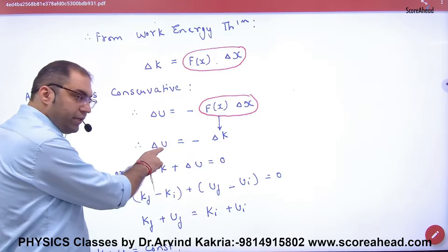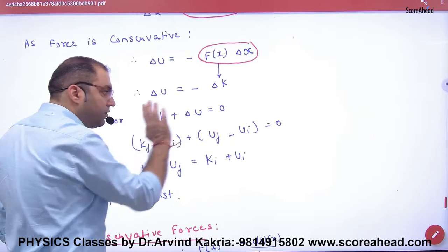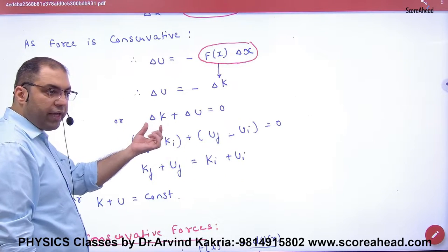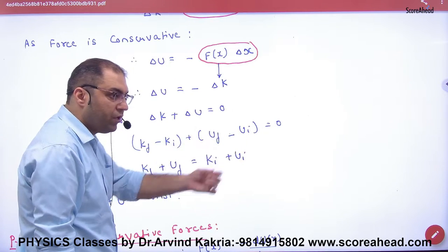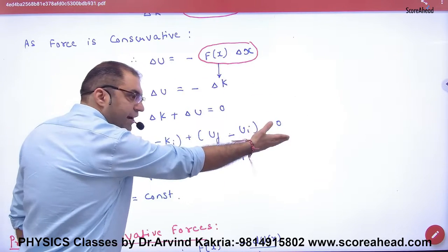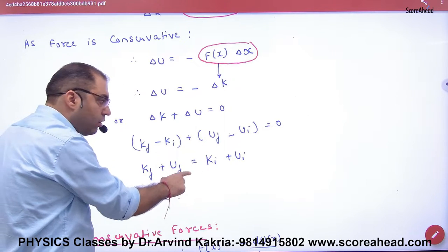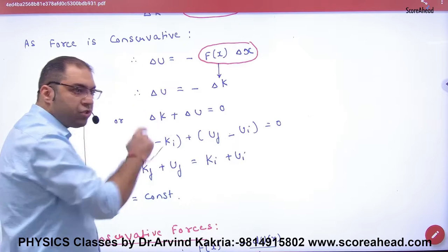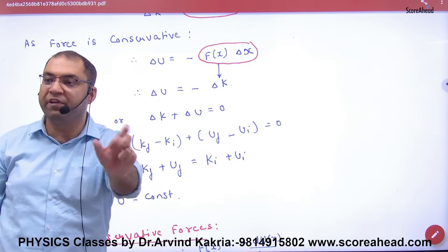That means delta U is minus delta k. Delta k is final kinetic minus initial kinetic. Delta U is final potential minus initial potential. So final kinetic plus final potential is equal to initial kinetic plus initial potential. The sum of energy, kinetic and potential, will remain the same.